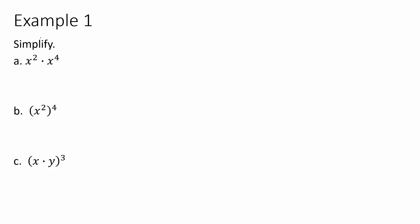We're going to explore what we can do with our exponents. The instructions will simply say to simplify — in math, simplifying means taking something and writing less while having it mean the same thing. We have x squared times x to the fourth; the dot in between isn't necessary, we could write them right next to each other and still know it's multiplication.